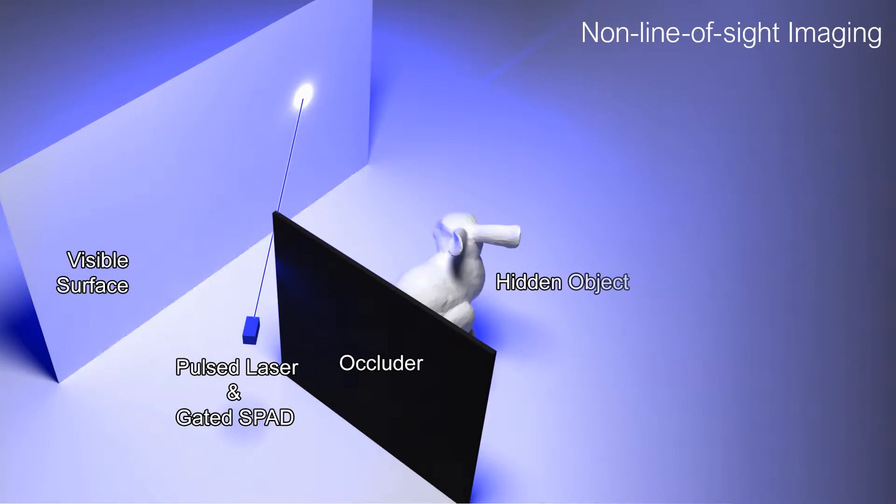Non-line-of-sight imaging aims at recovering occluded objects in a scene like this, where we have a diffuse wall which we illuminate with a coded source. Existing methods use pulses of light and measure their time-resolved returns scanned on the visible wall area.